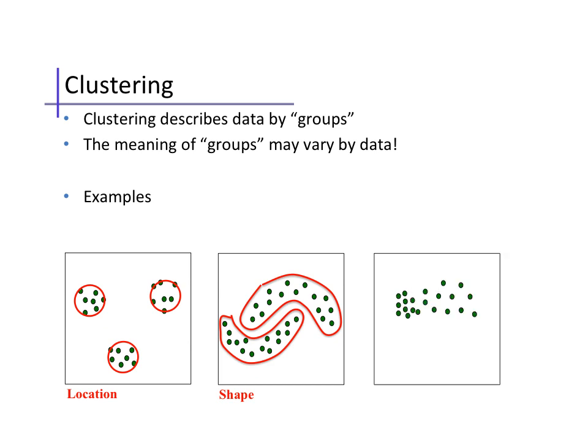In a third example, we might see that the data have different properties in different parts of the space. For example, a different density in one part of the space than another. That density then might suggest a grouping of the data into two sets, one of which has sparse data and one of which has dense data.